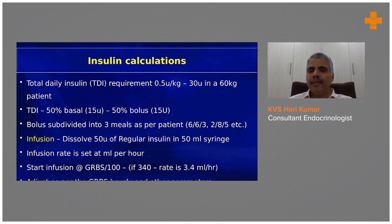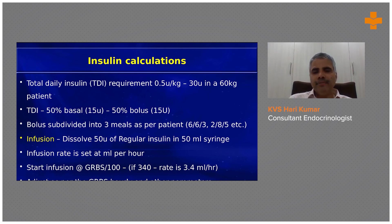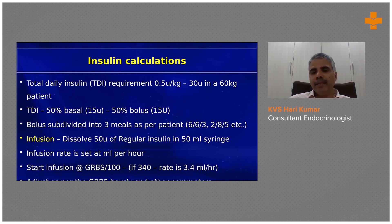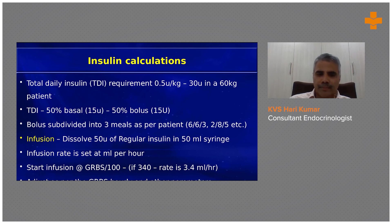For severely ill, critically ill, or ICU setups we use insulin infusion. 50 units of regular insulin — short-acting insulin — is used; there are no infusions prepared with intermediate or long-acting insulin. Only short-acting insulin is given as an intravenous infusion. Analog insulins have less role here because intravenously the pharmacokinetics are the same between analogs and regular.